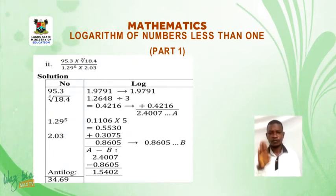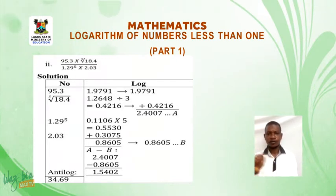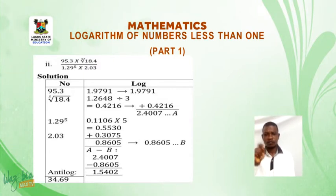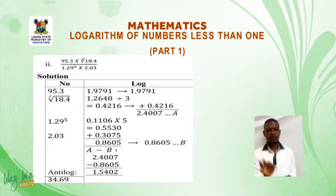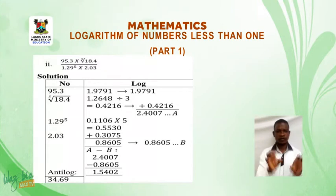Now we remove that of B from the one we tagged A. When we remove B from A, we get 1.5402. The antilog of that gives us 34.69. Bye now class, meet you after the timeout.